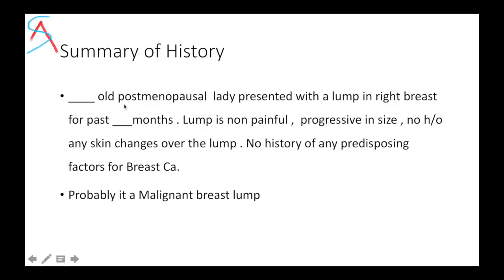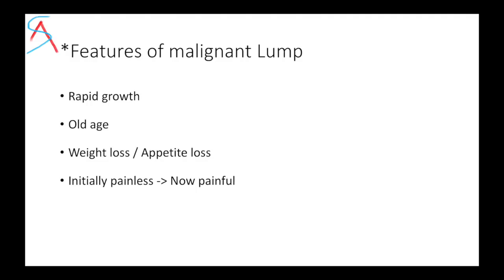You can present like: '53-year-old post-menopausal lady presented with a lump in the right breast for the past six months. Lump is non-painful but progressive in size with no history of any skin changes over the lump. No history of any predisposing factors or risk factors for breast carcinoma.' You can say probably a malignant lump. Features of a malignant lump are rapid growth, old age of patient, history of weight loss or loss of appetite, and a lump that is initially painless but later becomes painful.